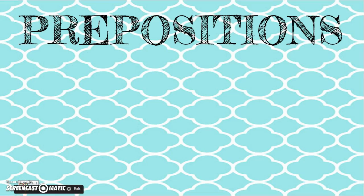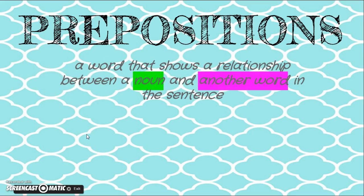We've reviewed each of the eight parts of speech, but now we're going to get into a little more study of what each part of speech does and how they're used within sentences, and how we use them as readers and how we use them as writers. So the first one is a preposition. Starting with a definition: a word that shows a relationship between a noun and another word in the sentence.